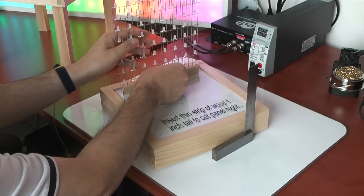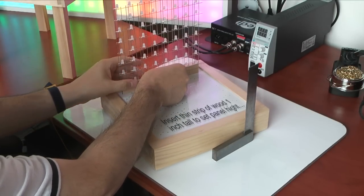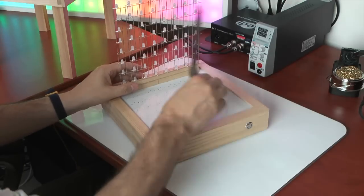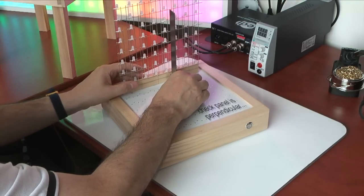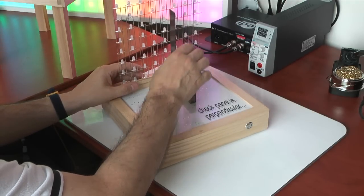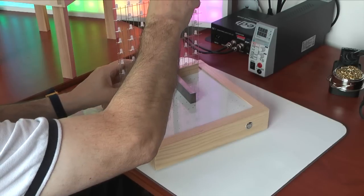I then take a thin strip of pine wood, one inch tall, and use this to set the height of the 8x8 panel. I use an engineer's set square to make sure that the panel is perpendicular to the base.